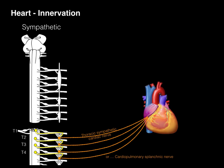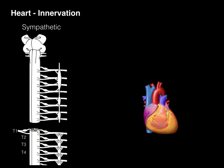Because the heart arises so high up in the embryo, up in the neck region, there are also cervical parts of the chain that innervate the heart. But just because it comes from the cervical ganglion, we have to remember that all sympathetics come from T1 to L2. So at the T1 to T4 levels, that preganglionic sympathetic neuron enters the sympathetic chain, ascends up to the superior cervical ganglion, synapses, and then the postganglionic sympathetic neuron goes off to the heart — this is a cervical sympathetic cardiac nerve.